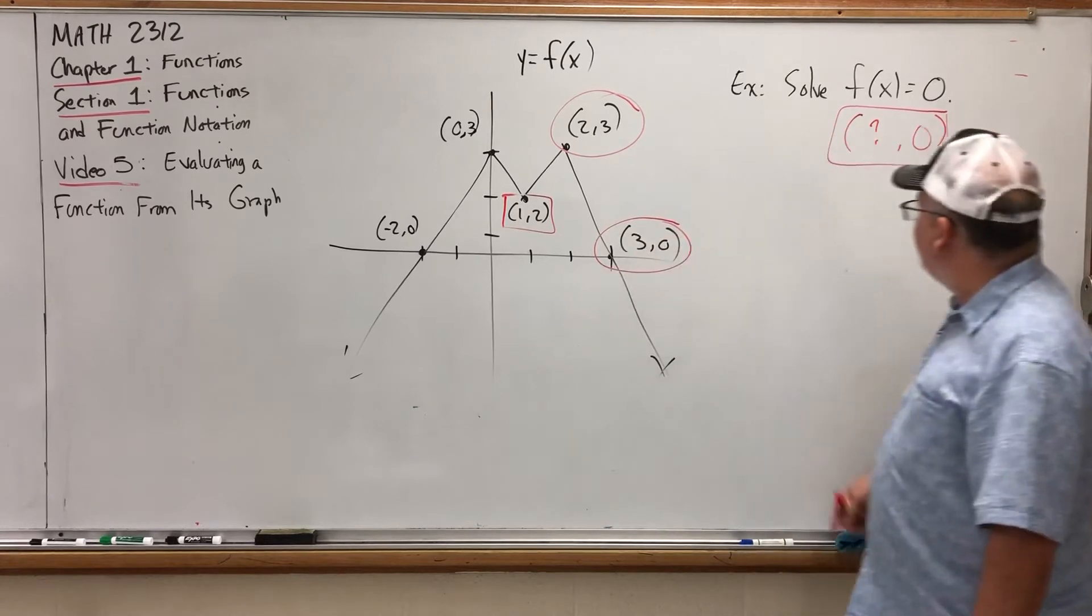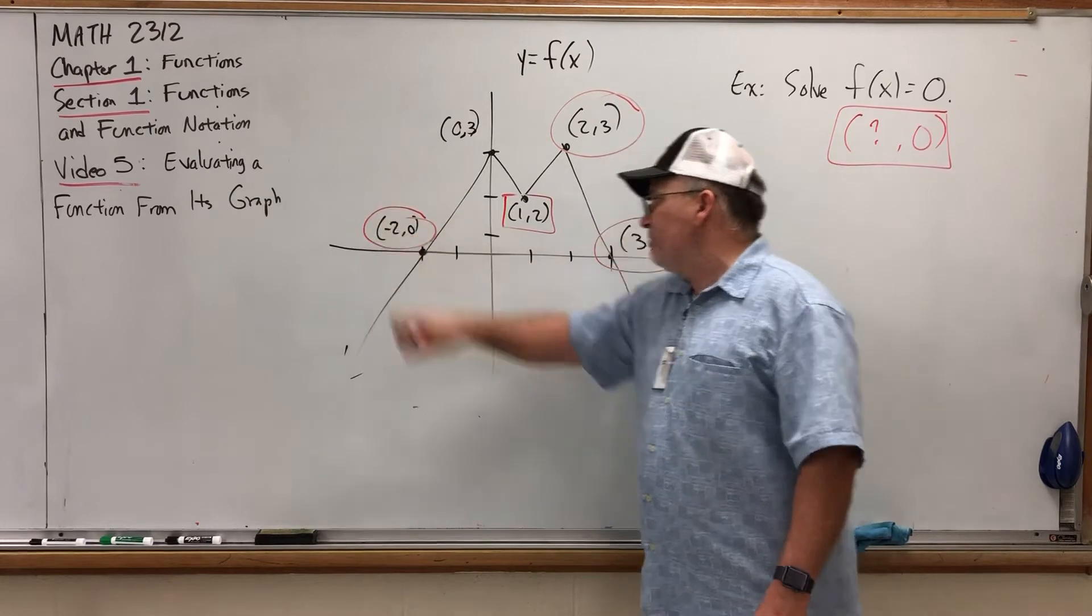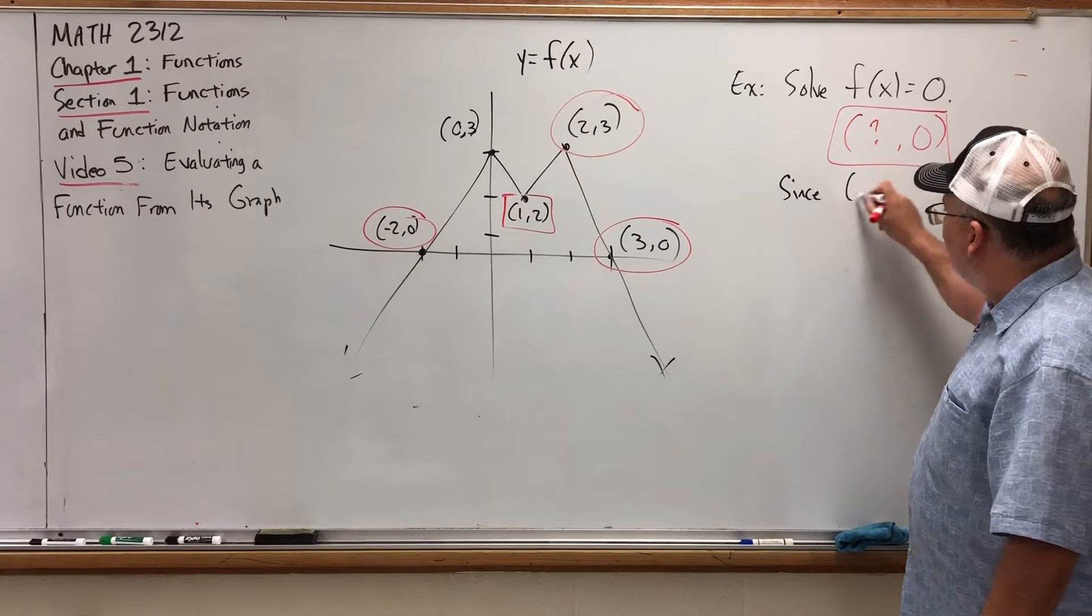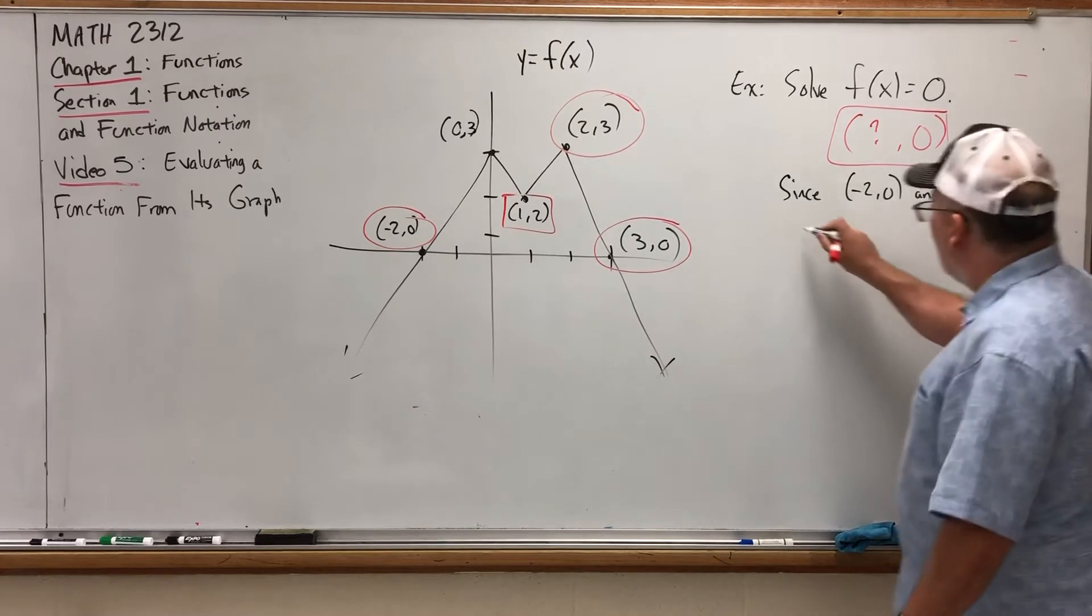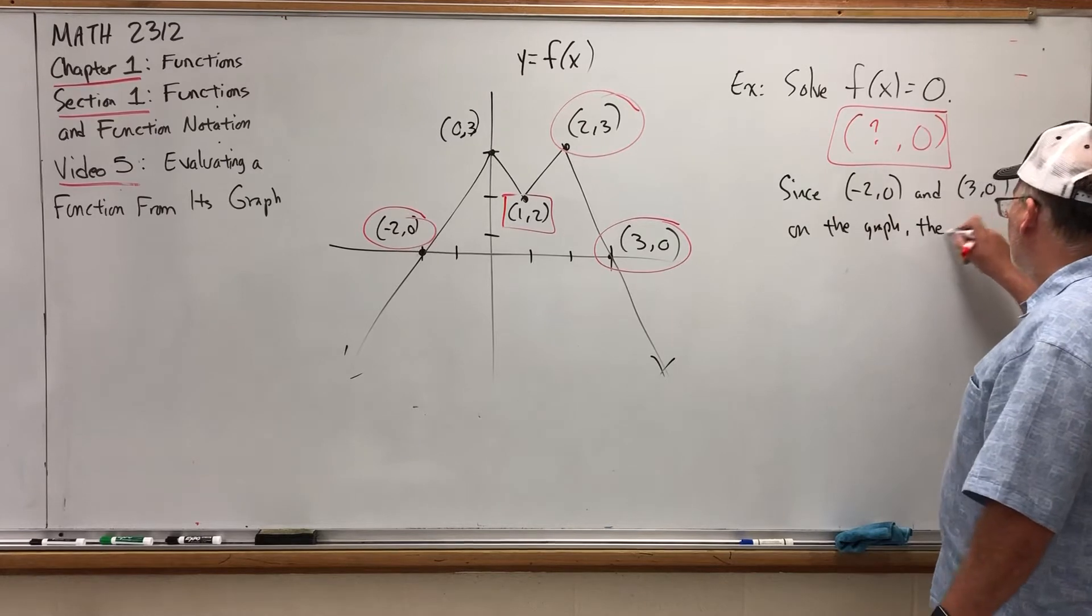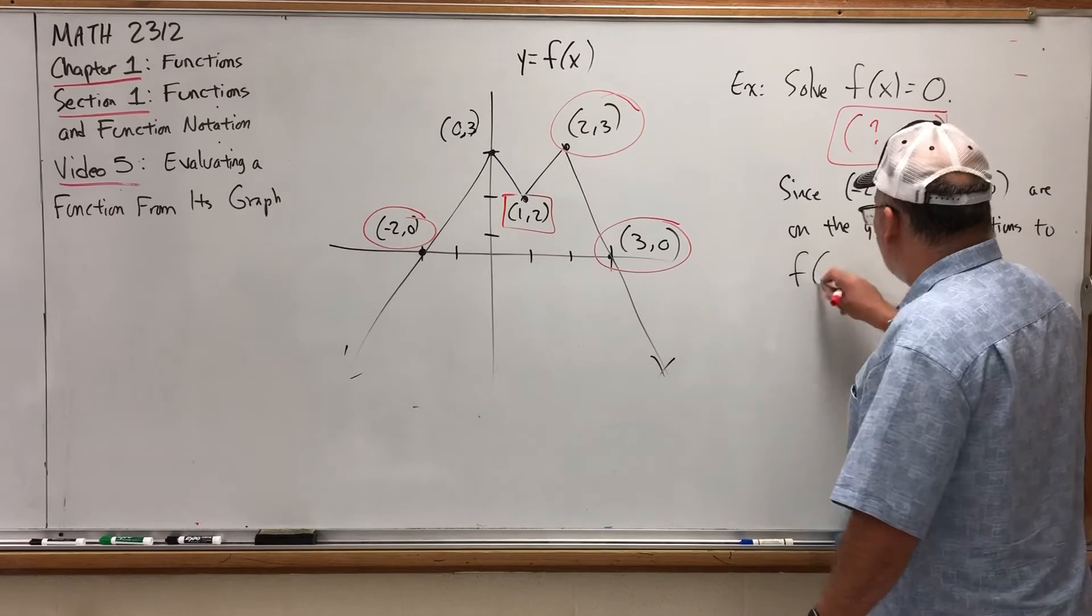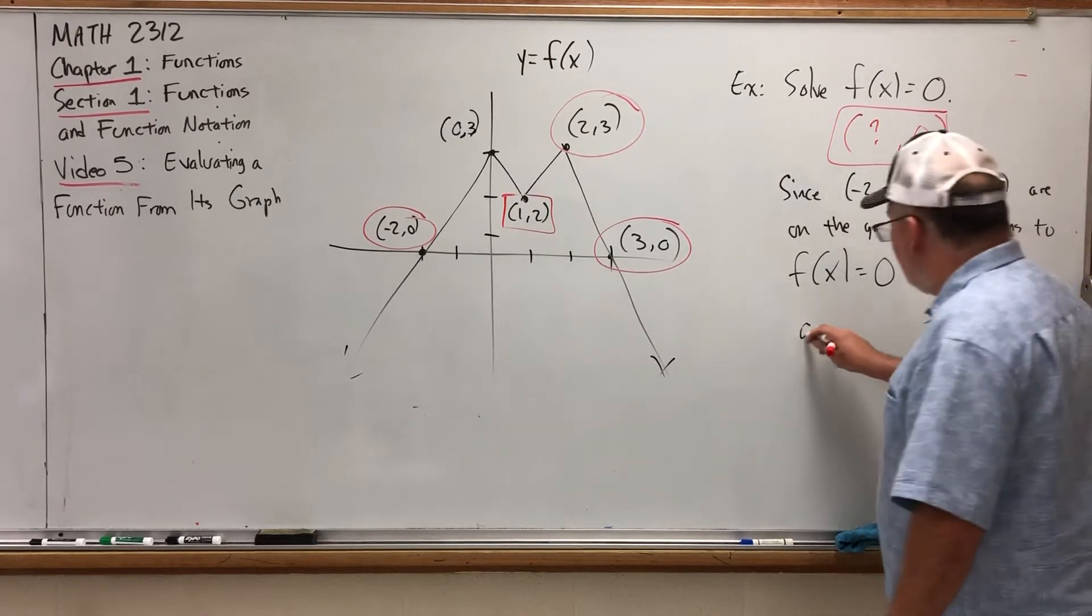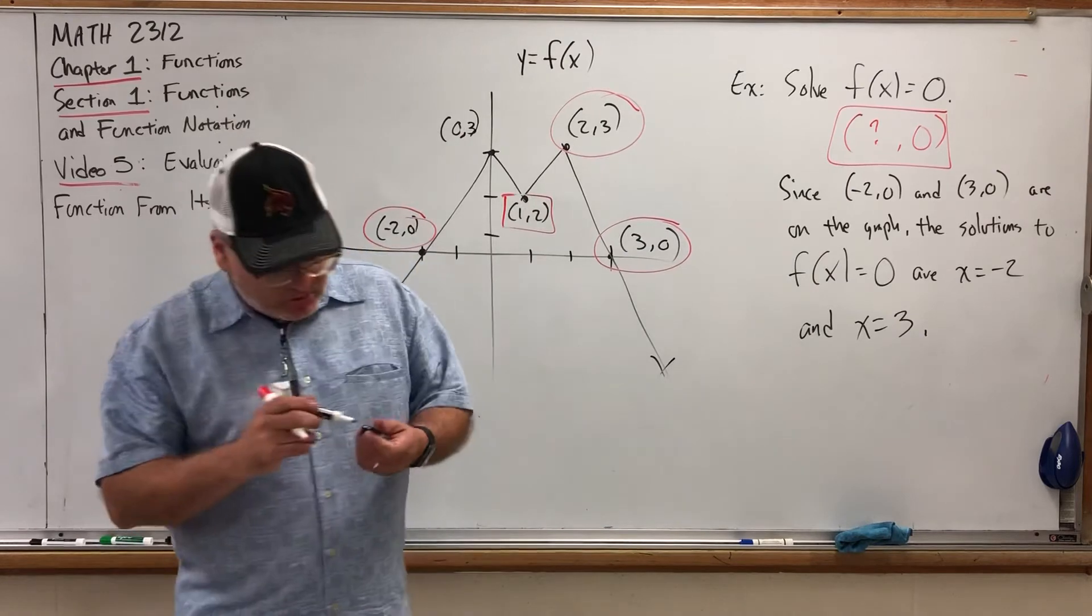The point 3, 0 has the structure that we're looking for, it has the correct output, but so does the point negative 2, 0. So, since negative 2, 0 and 3, 0 are on the graph, the solutions to f of x equals 0 are x equals negative 2 and x equals 3. And if there were another x-intercept, that would be a solution as well.